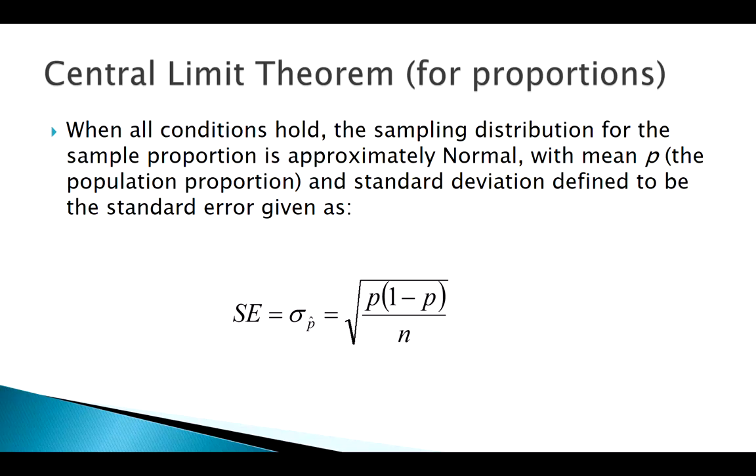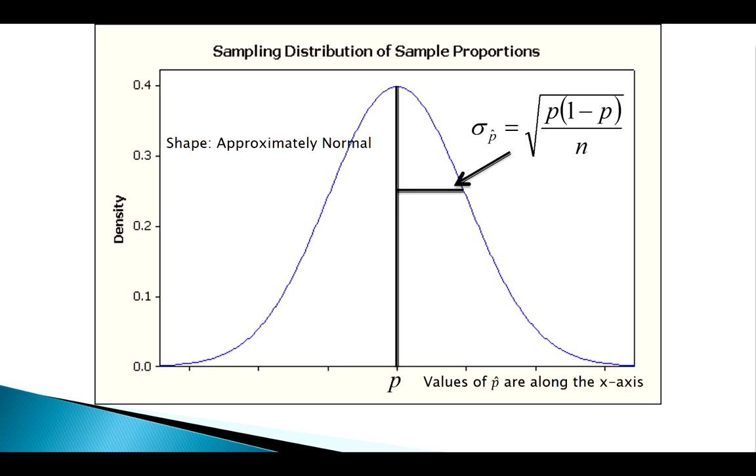In our last video, we saw how we can apply the central limit theorem to the sampling distribution of the sample proportion, if we meet certain criteria. And theoretically, we know this distribution should look something like this, if we meet these criteria.